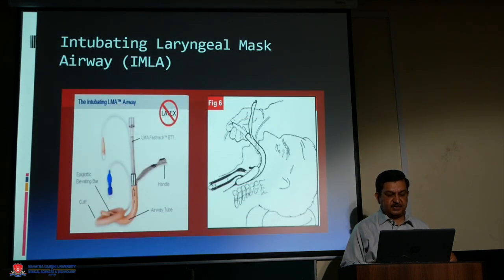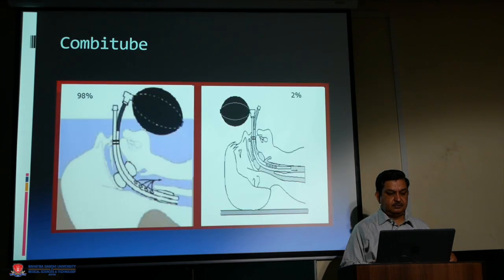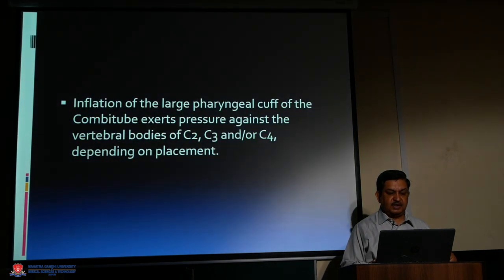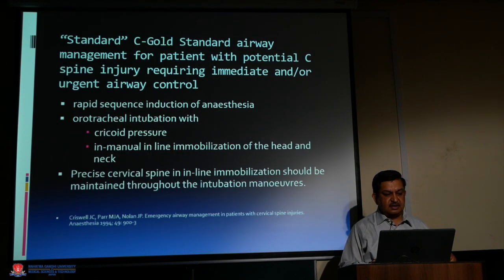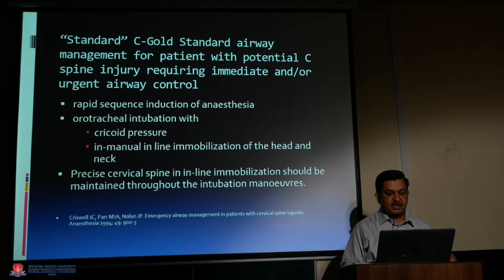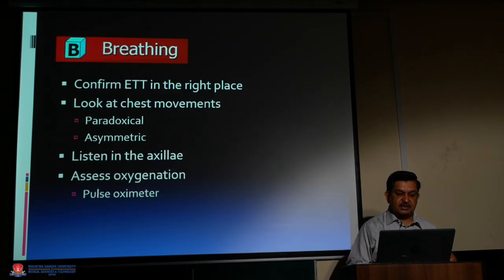Airway management in trauma includes pre-oxygenation, BLS maneuvers, RSI with cricoid pressure, laryngoscopy, and oral intubation. Options also include intubating laryngeal mask airway and the Combitube, where inflation of the large pharyngeal cuff exerts pressure against the vertebral bodies of C2, C3, and C4 depending on placement. This is the standard approach to airway management for patients with potential cervical spine injury requiring immediate or urgent airway control.